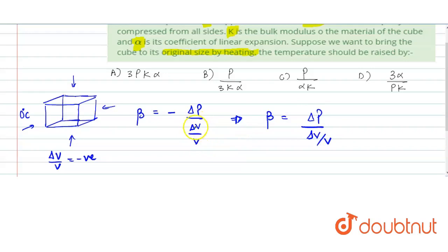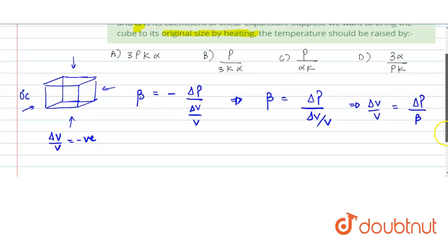So beta will be written as delta P divided by delta V by V, because delta V value is negative. So minus and minus will be positive. So from here, can we find the value of delta V by V, which is the volumetric strain. So that is delta P divided by beta.